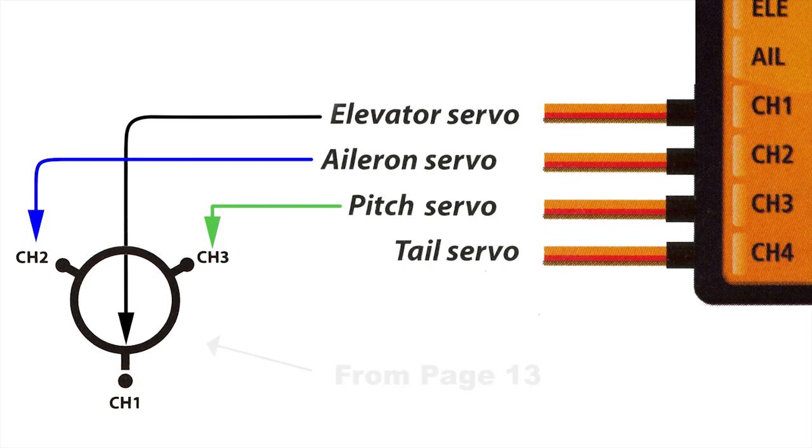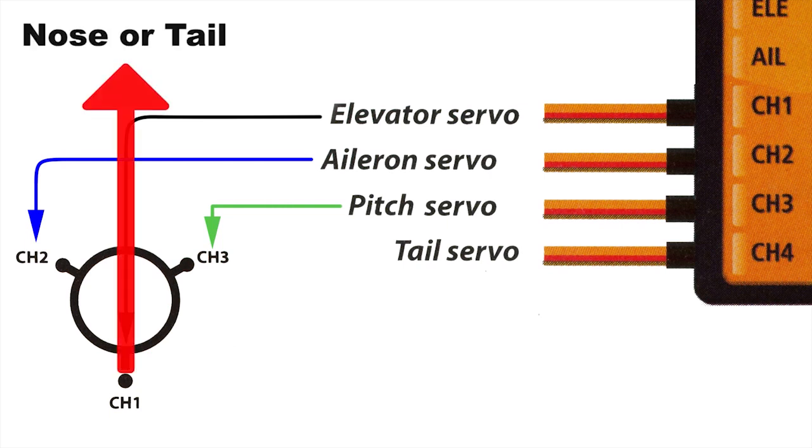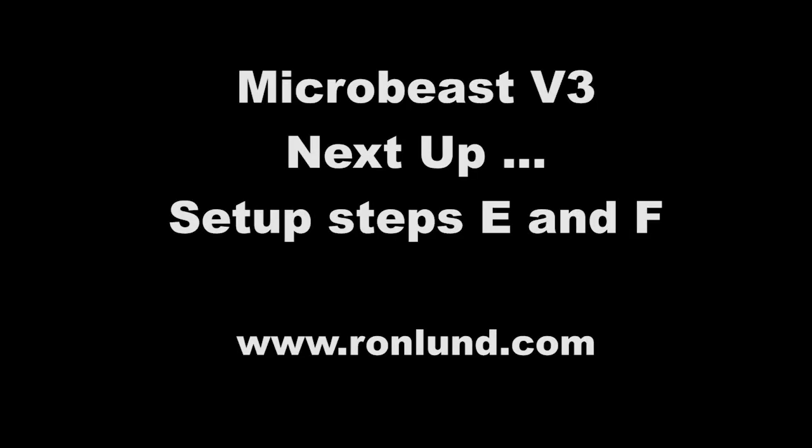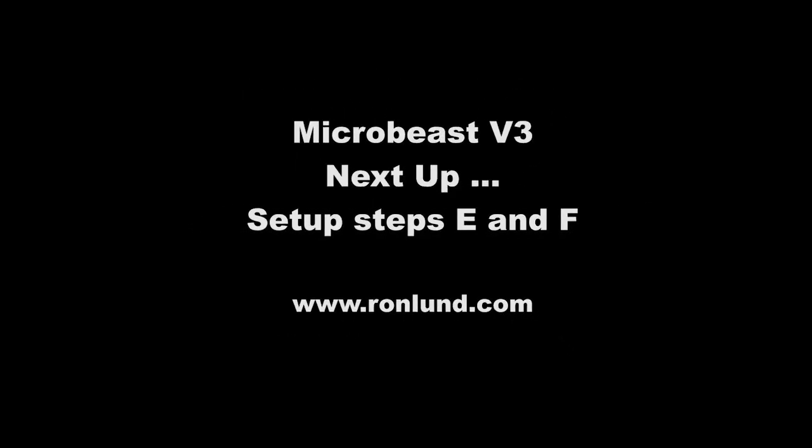It represents a swashplate from above, with the nose or tail - it doesn't make any difference. You hook your pitch servo up on one side, your aileron servo up on one side, and the elevator servo either at the front or the back. Then the rudder servo goes to the rudder servo. Next up are steps E and F.